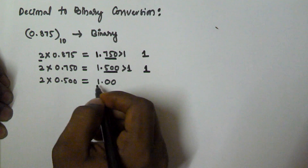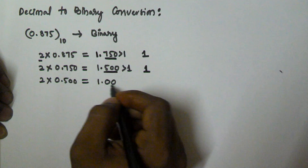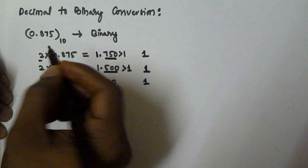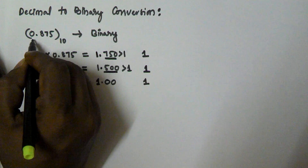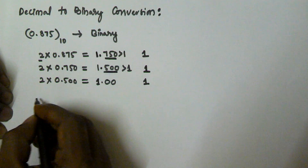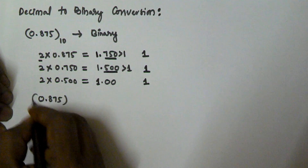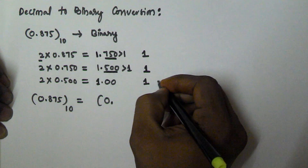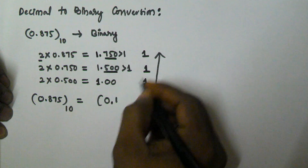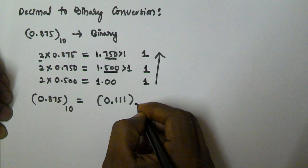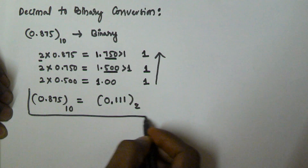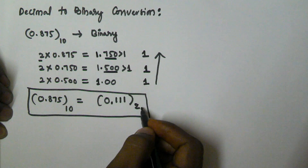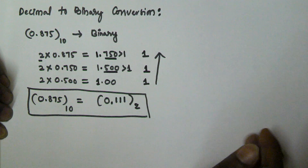Whenever we get 1.00 we stop the procedure and take 1. So now the binary equivalent of 0.875 in decimal is found by reading the values from bottom to top: 1, 1, 1. So 0.875 in decimal is equivalent to 0.111 in binary.